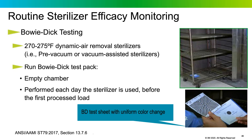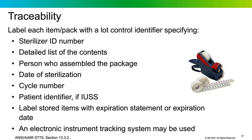AAMI ST-79 recommends that each item be labeled with a load control identifier prior to sterilization. This allows items to be identified or retrieved in the event of a sterilization process recall. Items processed for immediate use should also include a patient identifier, and items stored for later use should have either an expiration statement for event-related shelf life systems or an expiration date for time-related shelf life systems.